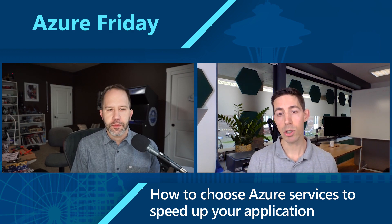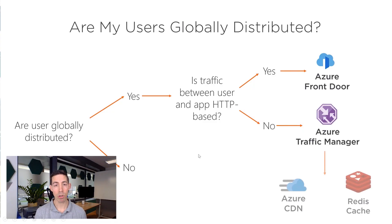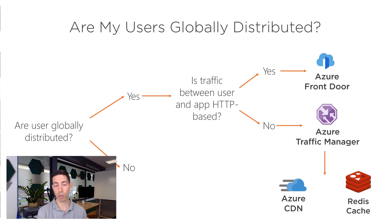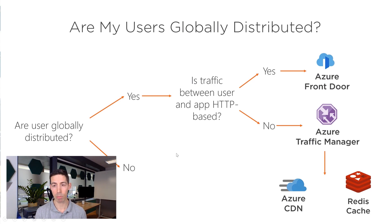If you're using either of these services, you might also want to augment them with Azure CDN and/or Azure Cache for Redis to get that data and those static files close to your users if they are globally distributed. What you basically want to do is get everything as close to your users as possible so that the latency is as low as possible. This is the first question: are my users globally distributed? It helps you sift through these services.